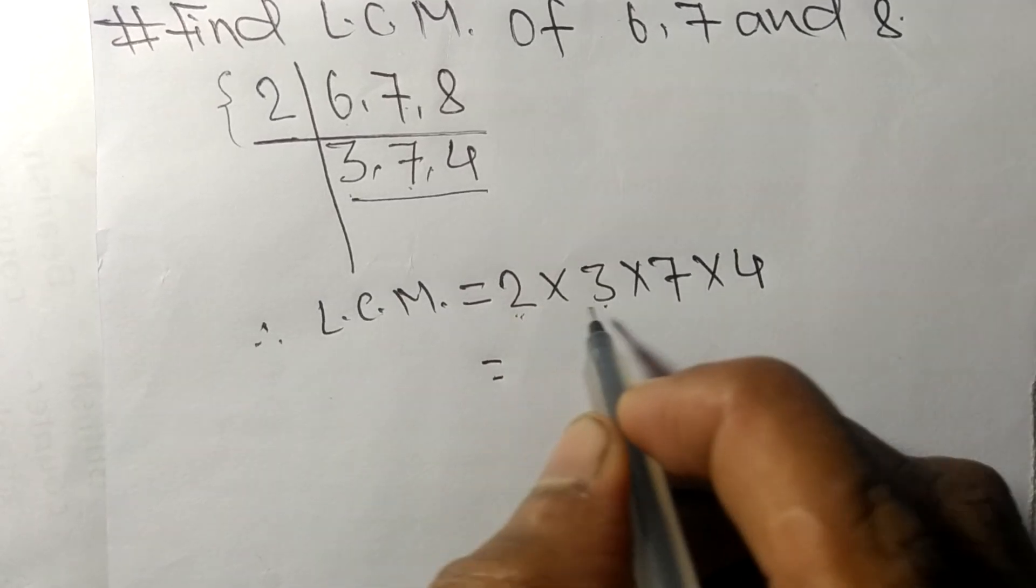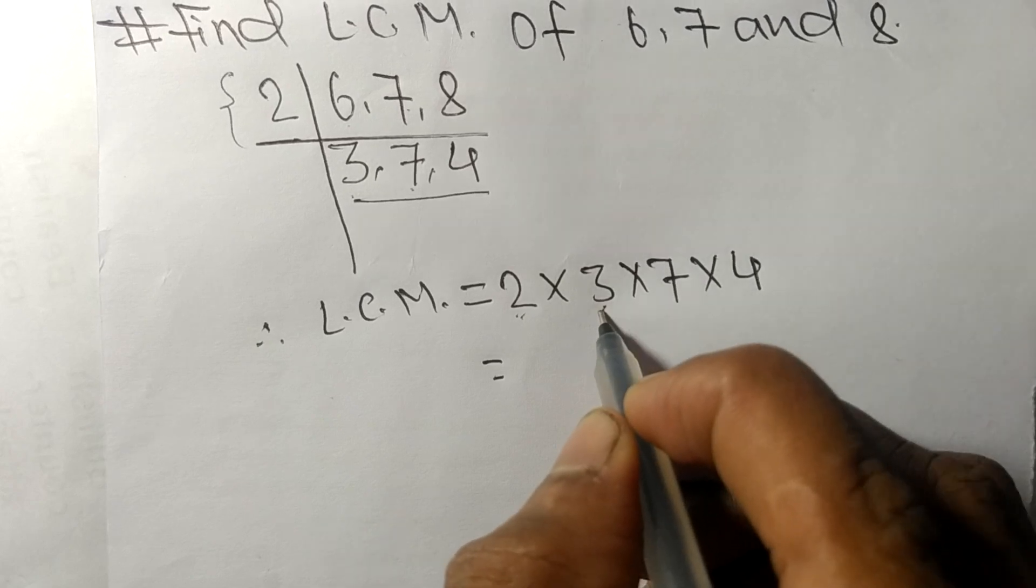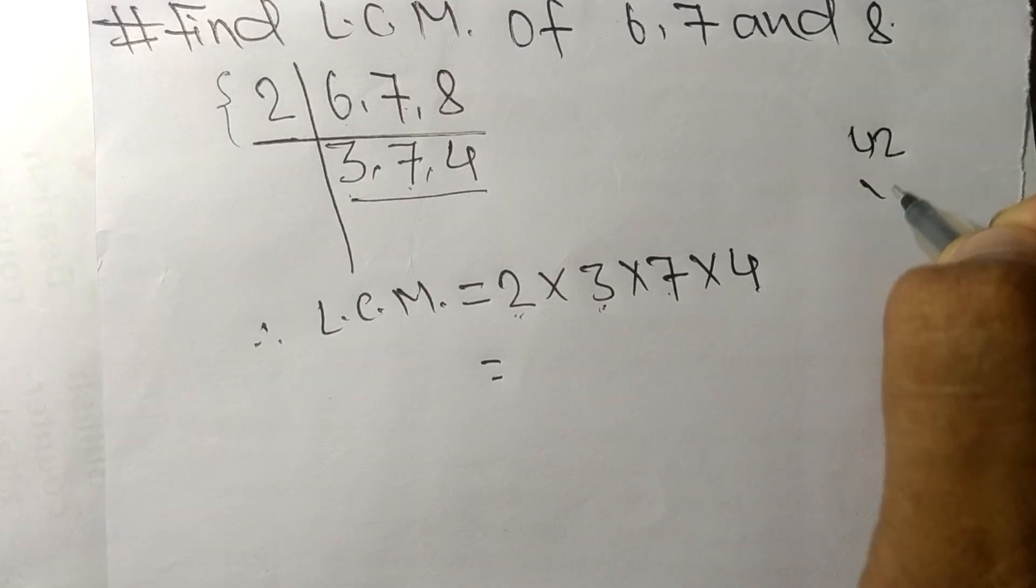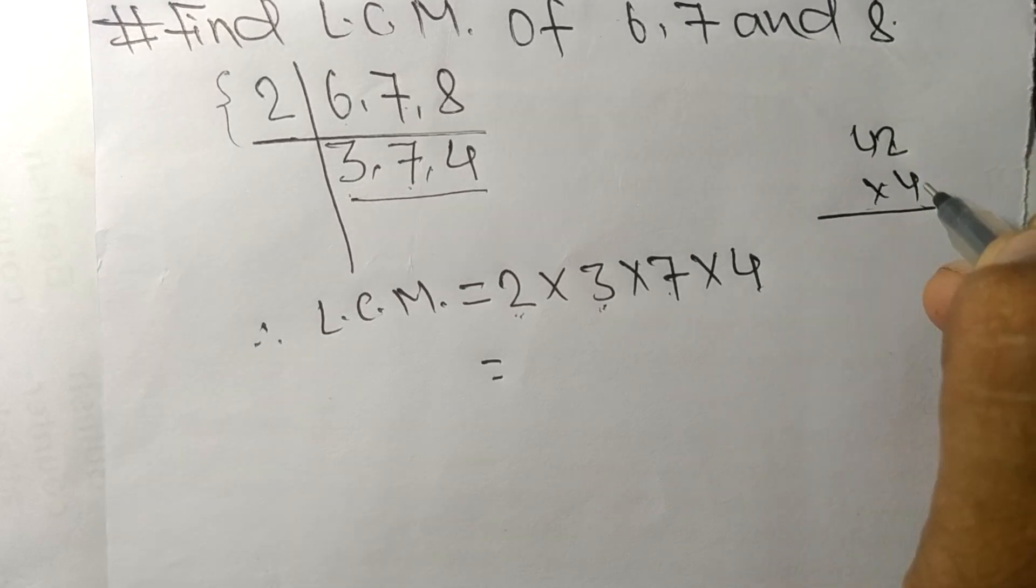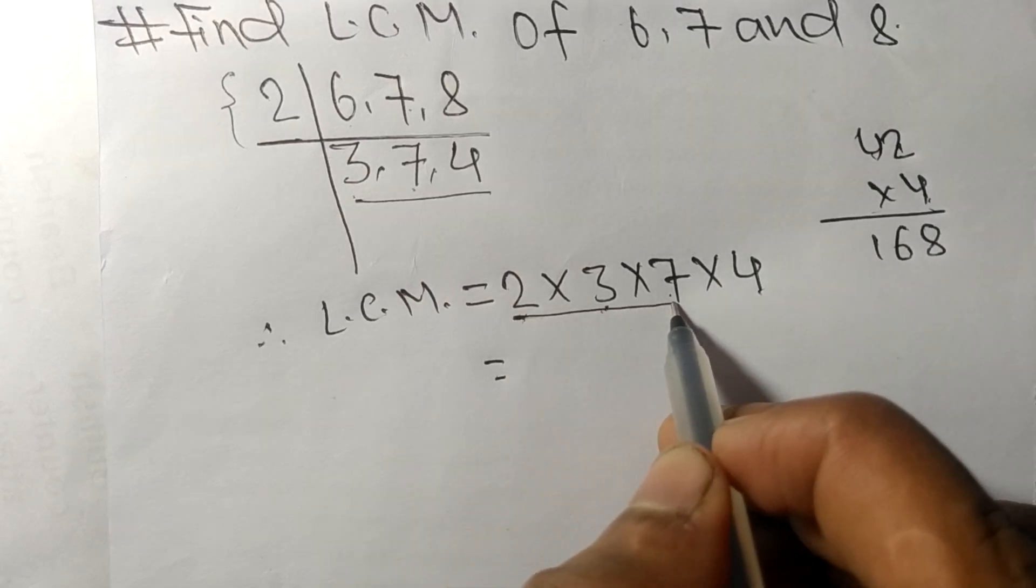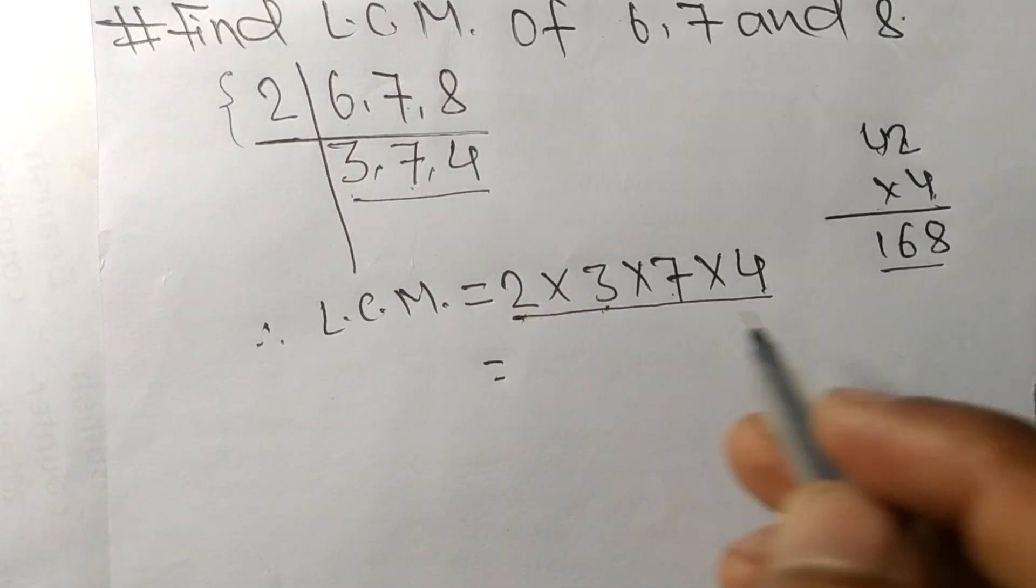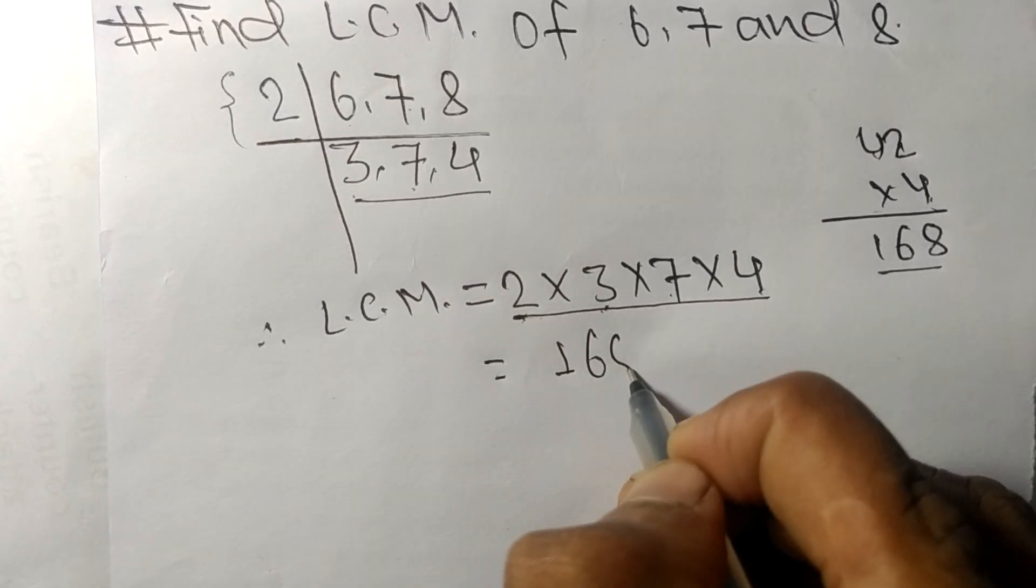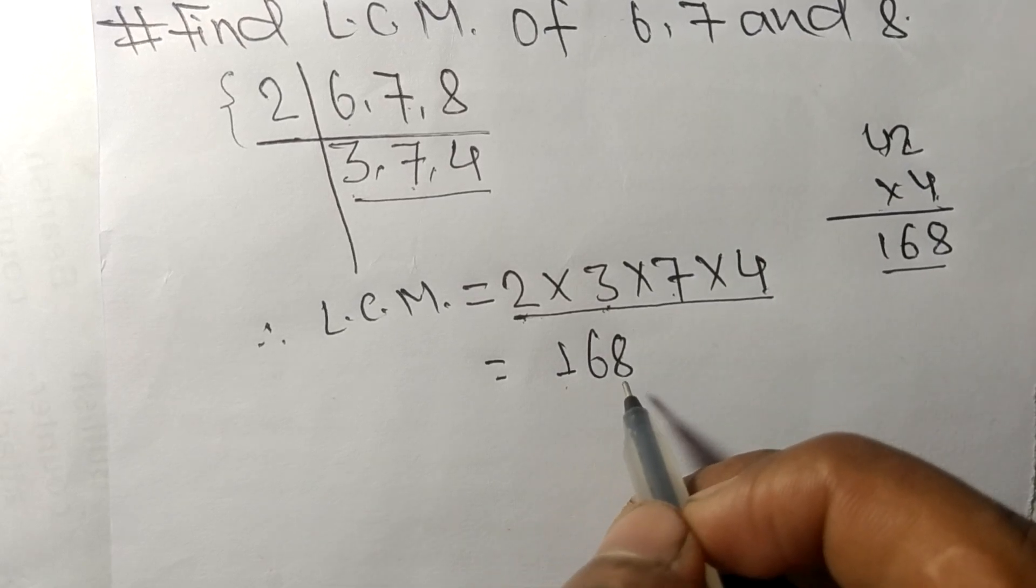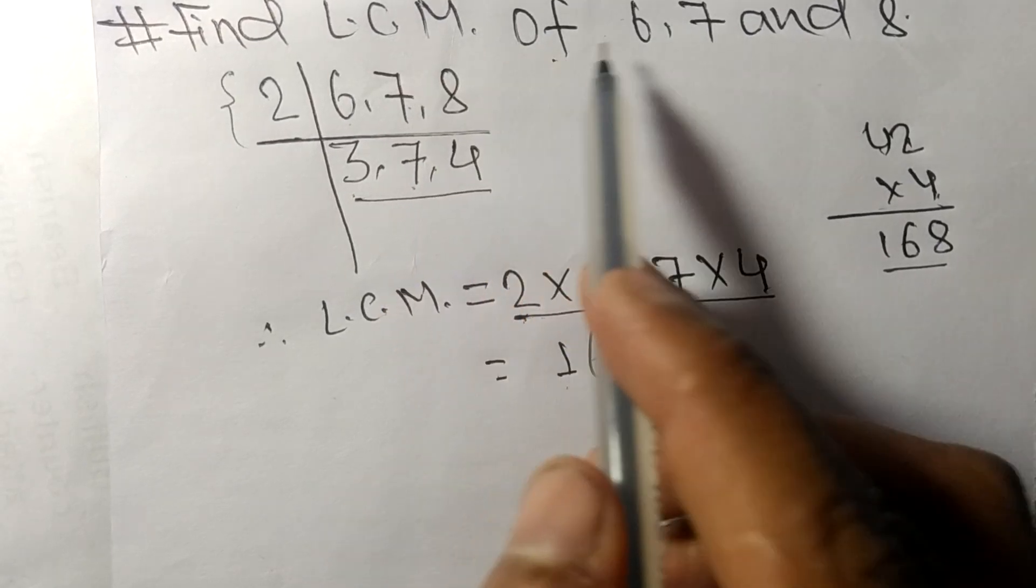So 2 times 3 is 6, 6 times 7 means 42, and 2 times 4 means 8, 4 times 4 means 16. So by multiplying all these numbers we got 168. So 168 is the LCM of 6, 7 and 8.